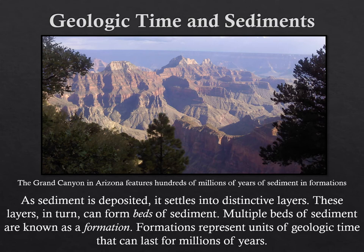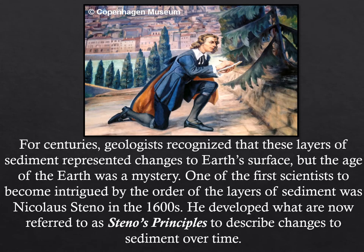On this slide, we have an image of the Grand Canyon that I took in 2012. We've got some beautiful formations here in this canyon that span hundreds of millions of years. This entire canyon represents about 550 million years of time or more in just this one particular area. For centuries, geologists recognized that the layers of sediment deposited on Earth represented changes to its surface, but the age of the Earth was an absolute mystery.